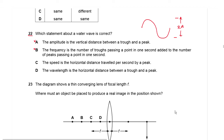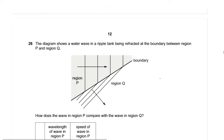Option C states the speed is the horizontal distance traveled per second by a peak. This seems correct because speed is distance divided by time, and the distance traveled per second by a peak fits that definition. Option D states the wavelength is the horizontal distance between a trough and a peak — that is not right, because wavelength is the horizontal distance between two consecutive peaks or two consecutive troughs. So option C is the right answer.